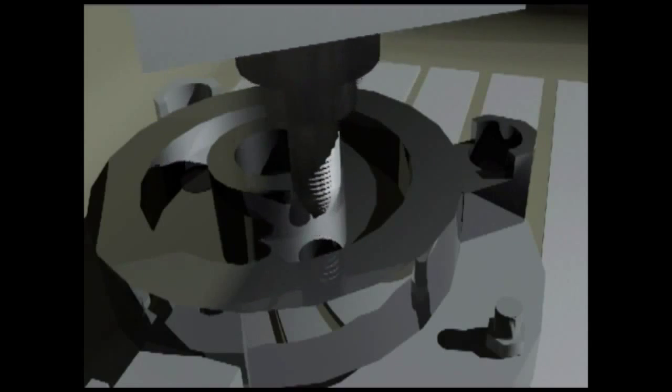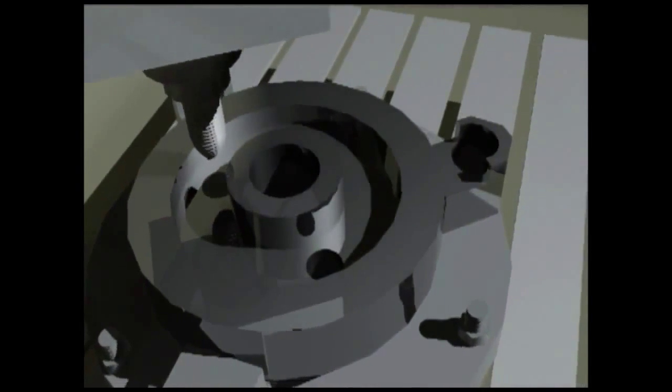Now the blank goes into a computer-controlled mill. The mill drills holes through which lubrication will flow when the gear is operating.